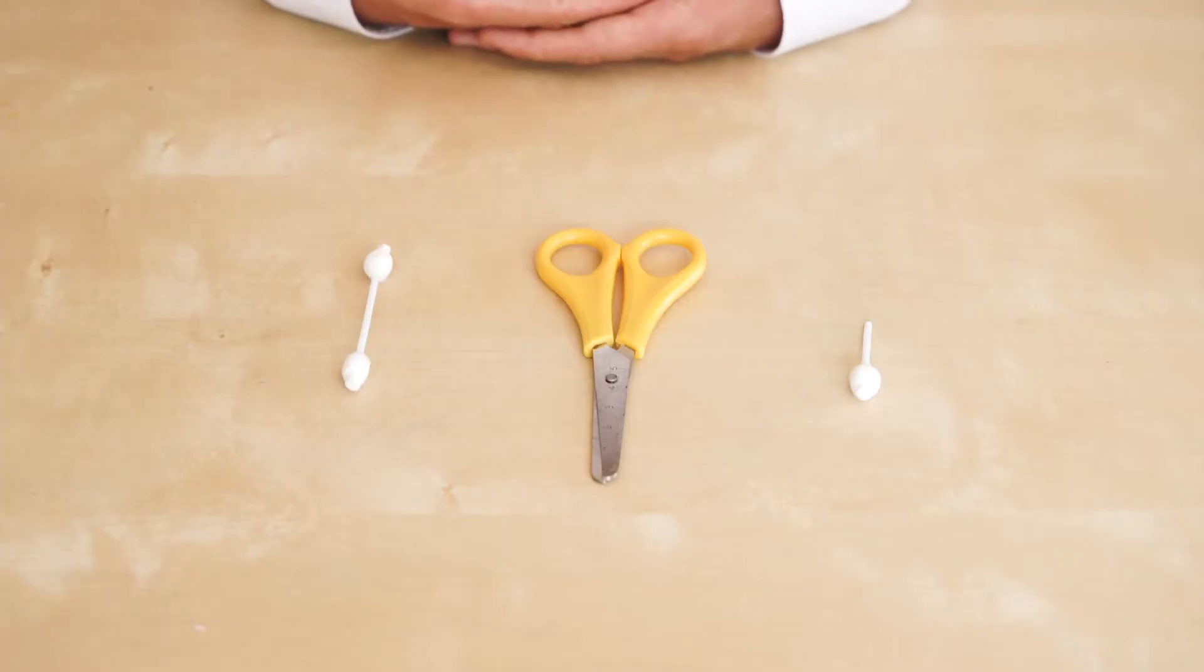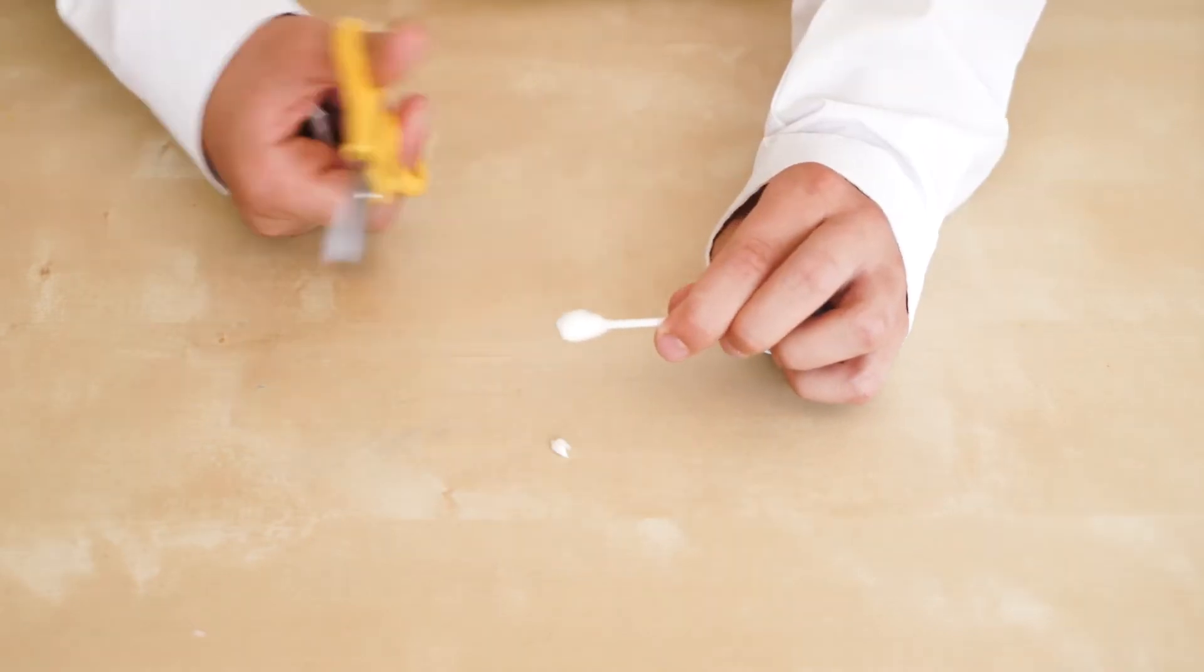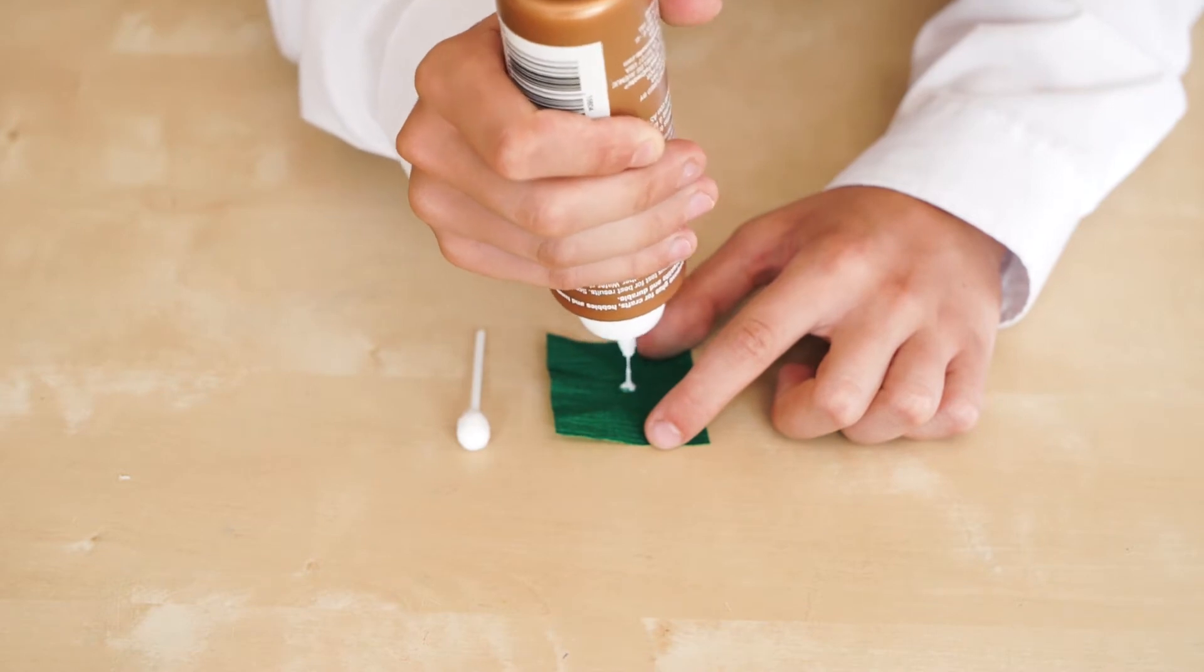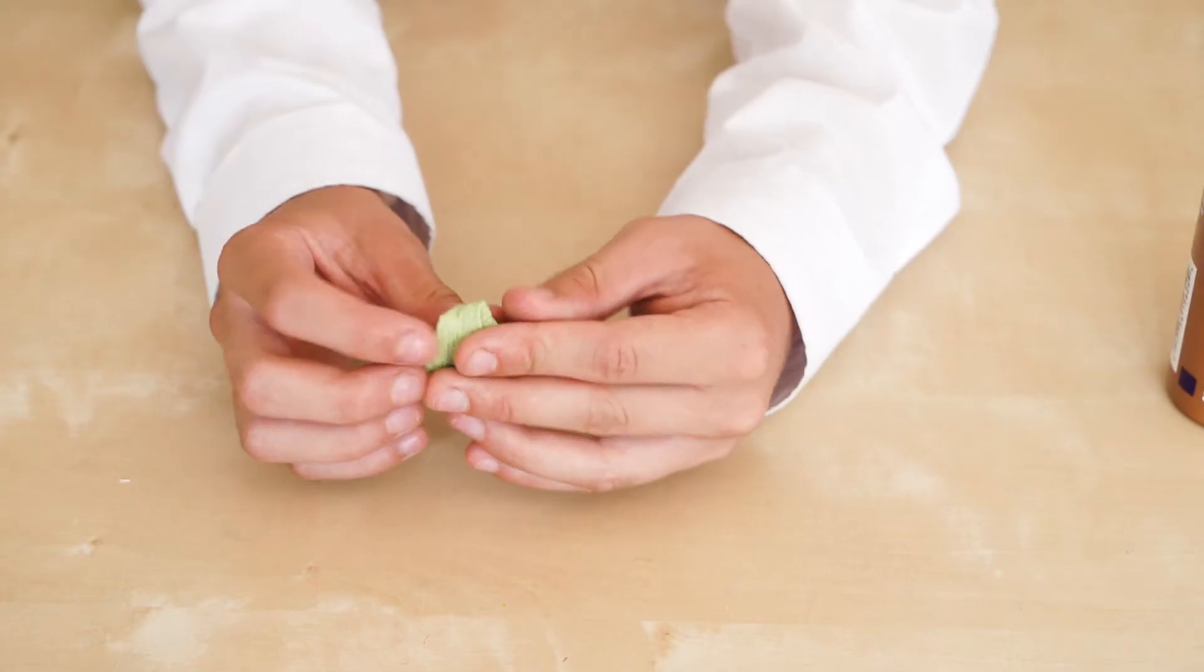Take a child-safe q-tip and cut off the end. Take off the tiny part on the top. Cut out a green square. Put a dot of tacky glue on the center of the dark side. Wrap the crate paper.